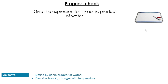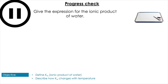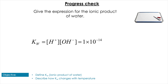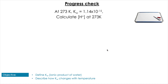Let's do a couple of questions to warm up. Give an expression for the ionic product of water — pause the video to try that. The answer is: [H⁺][OH⁻] = 1 × 10⁻¹⁴ at SATP.